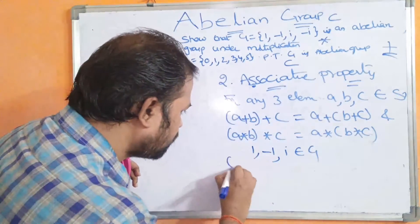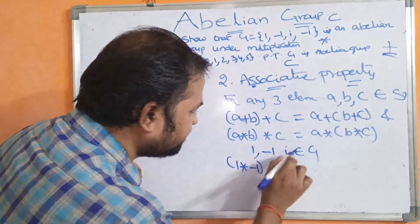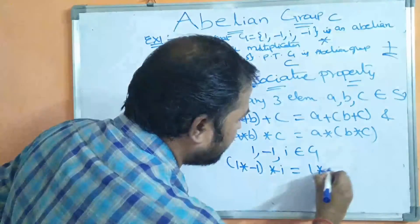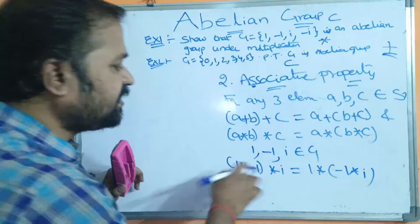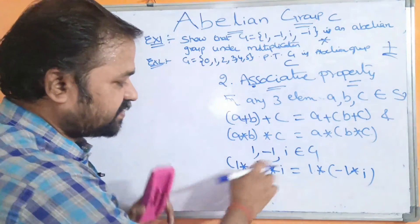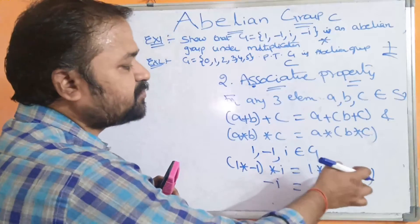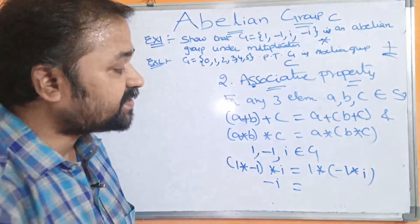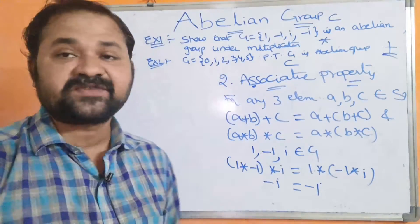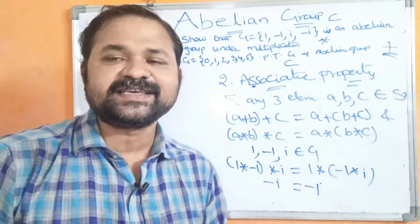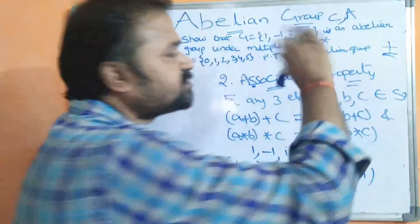For Example 1, take 1, -1, i belonging to G. With respect to the star (multiplication) operation: (1 ★ (-1)) ★ i = 1 ★ ((-1) ★ i). That gives (-1) ★ i = 1 ★ (-i), which gives -i = -i. LHS equals RHS, so associative property is satisfied.